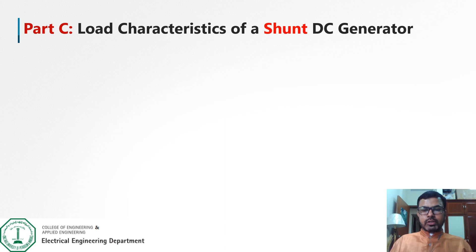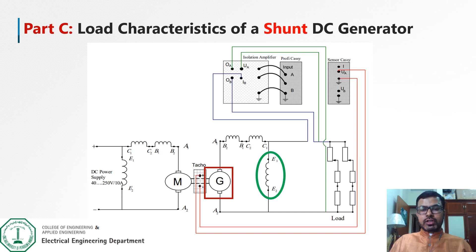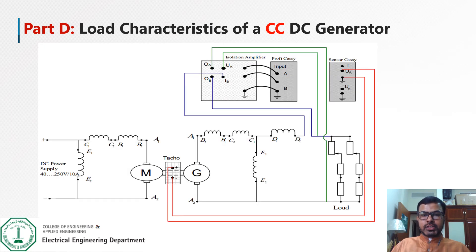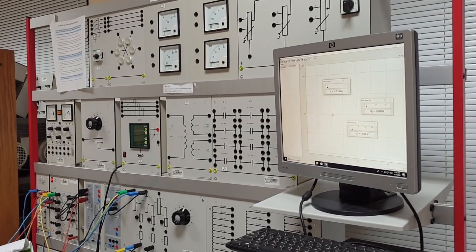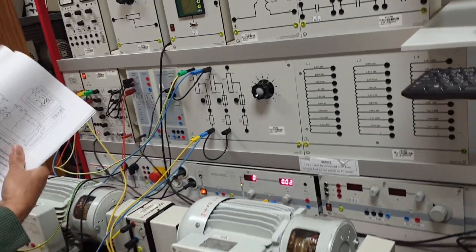In part C we will study the load characteristics of a DC shunt generator. As shown in the circuit diagram, the excitation E1 and E2 is connected in parallel with the generator itself, making it a self-excited DC shunt generator. In part D we will study the load characteristics of a cumulative compound DC generator. The only difference from the previous circuit is the addition of series winding D1 and D2, which converts the shunt generator into a cumulative compound DC generator. We will plot load current versus load voltage at different resistance values.